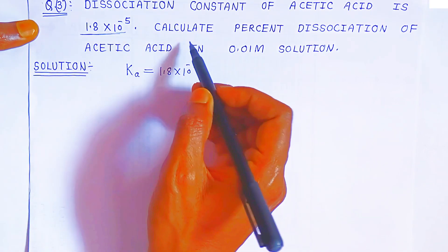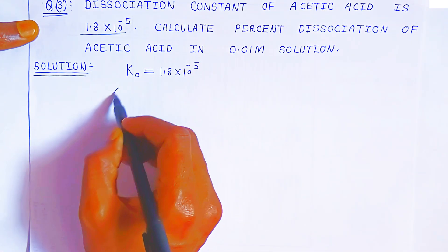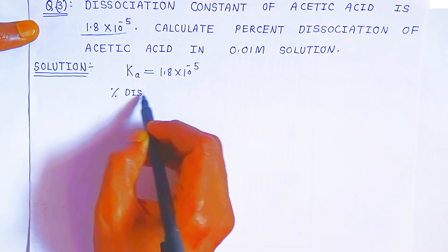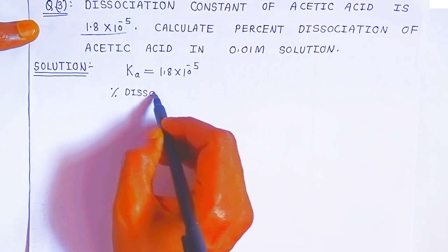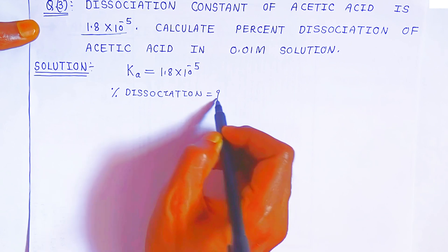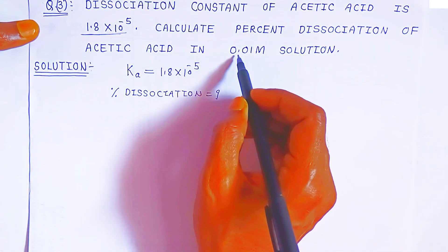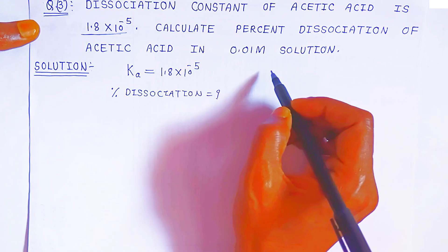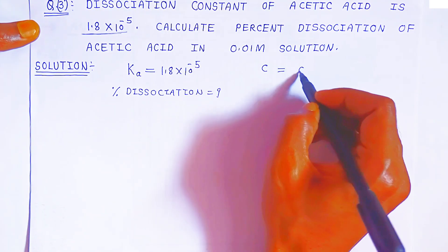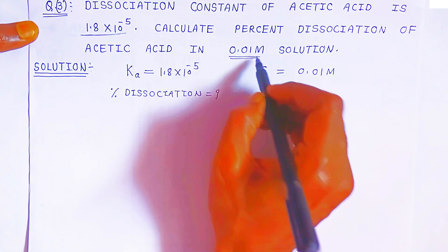Now read the second part of the question. We have to calculate the percent dissociation of acetic acid when the concentration is 0.01 molar. That means the concentration is 0.01 molar. This is the concentration.